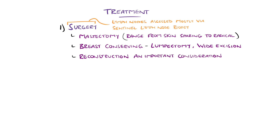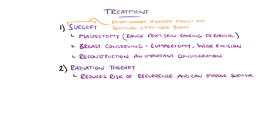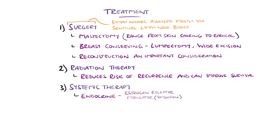Often an overlooked part of these procedures is the impact that the loss of breasts can cause; therefore, this is an important consideration, with reconstruction options available. Generally, radiation therapy is done after breast surgery, as it reduces recurrence risk and improves survival. Systemic therapy options include chemotherapy, endocrine therapy, or HER2-targeted therapy, again usually done after breast surgery. In estrogen receptor positive cases, endocrine agents like the estrogen receptor modulator tamoxifen can be used, and aromatase inhibitors like anastrozole or letrozole block peripheral production of estrogen.